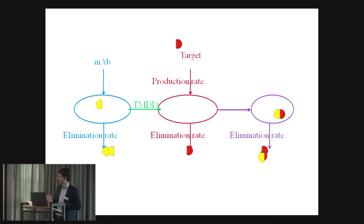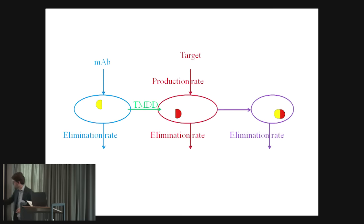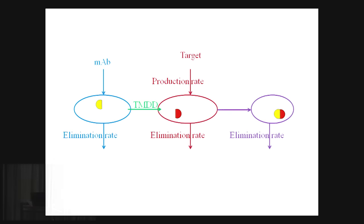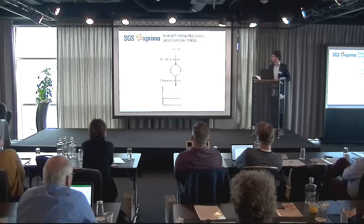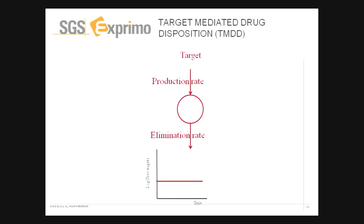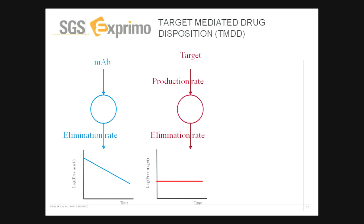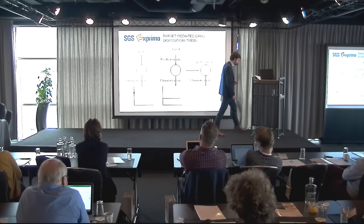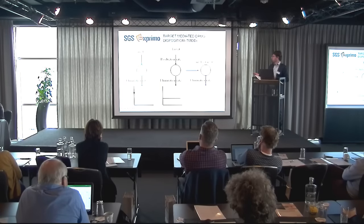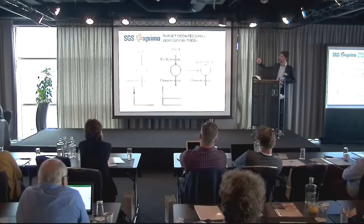There's elimination both from the complex and from the single molecule. After one hour, I have only two molecules of my compound available anymore, and the one I can actually measure is only the free molecule. In graphs, what we see is that typically, if we give our monoclonal antibody without any interaction, it's eliminated in an exponential way. But if we have this target-mediated drug disposition — if our monoclonal antibody binds to the target — then immediately there's a portion of our compound that disappears into the complex, and you will see that the elimination rate is much faster because it's eliminated through two different routes.